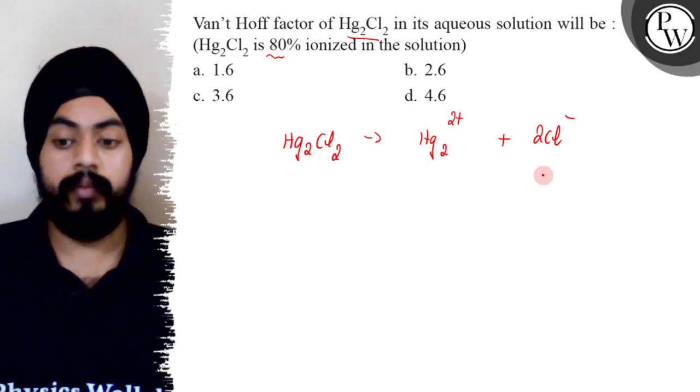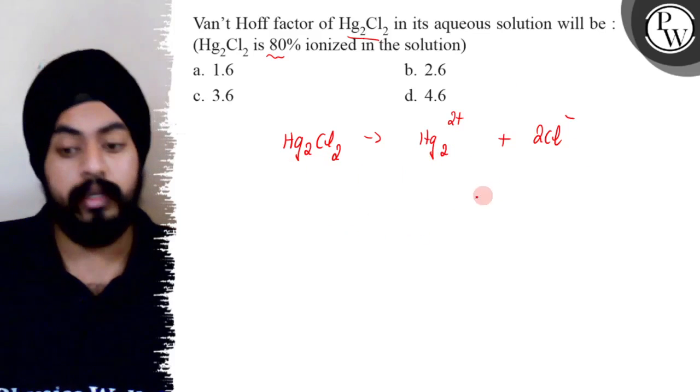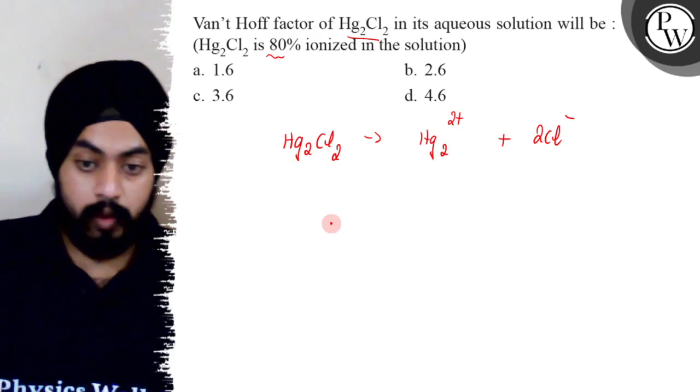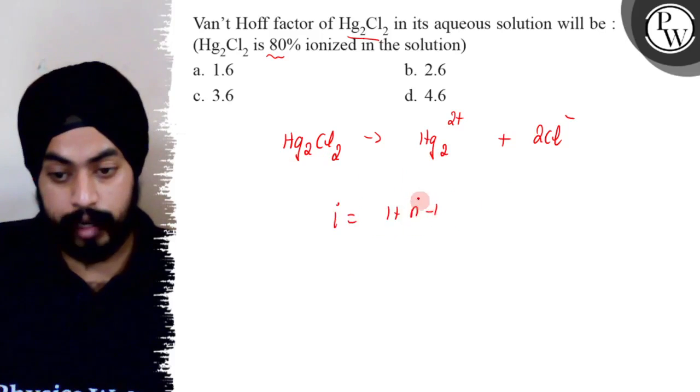For the Van't Hoff factor, the formula is i equals 1 plus (n minus 1) times alpha.